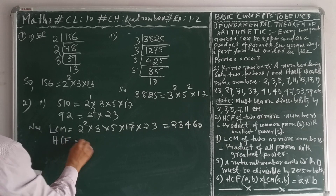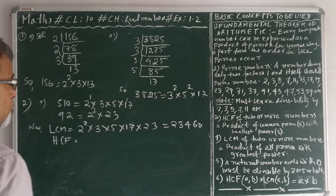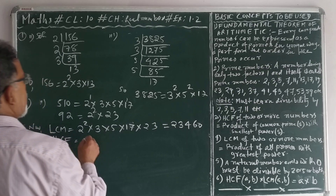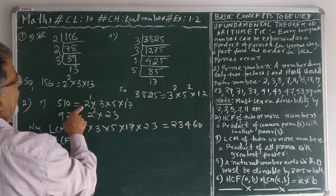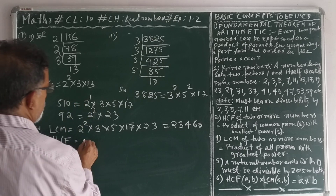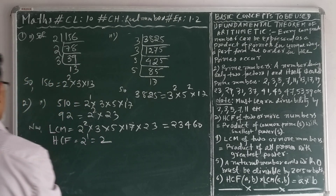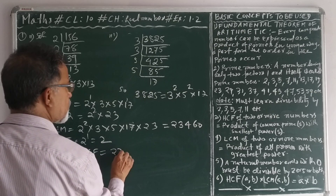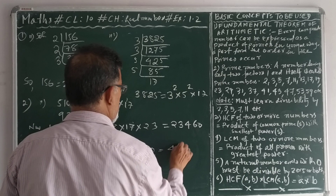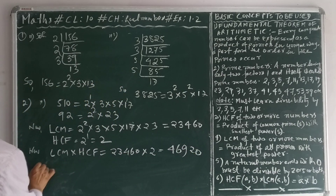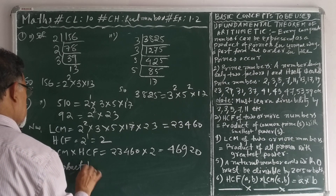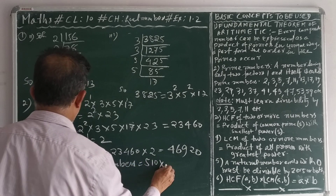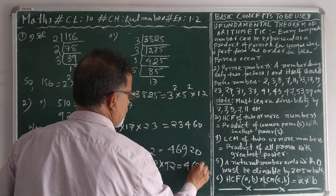HCF is equal to the product of the common prime factors with the lowest power. Here, 2 is the only common prime factor and the power of 2 is 1, so we take 2 to the power 1, which is equal to 2. Now, LCM into HCF equals 23,460 into 2, which equals 46,920. And the product of the numbers — 510 into 92 — is also equal to 46,920.